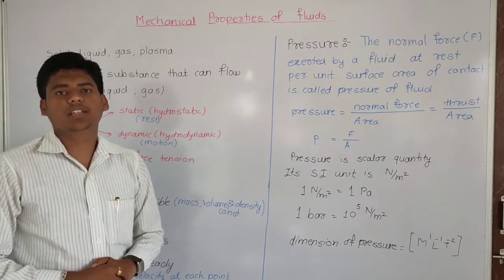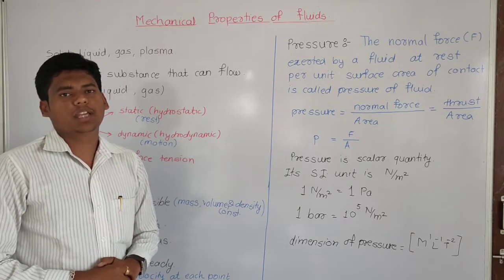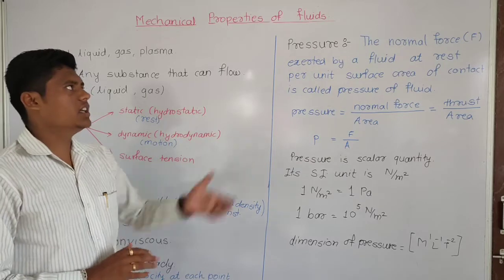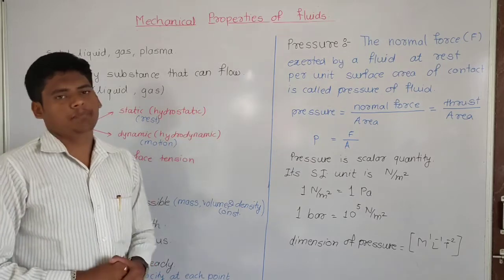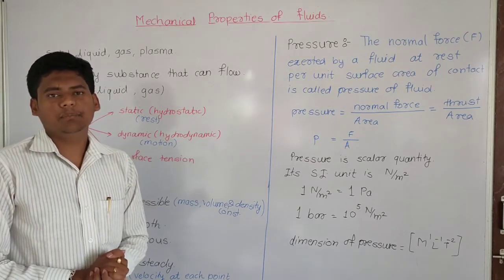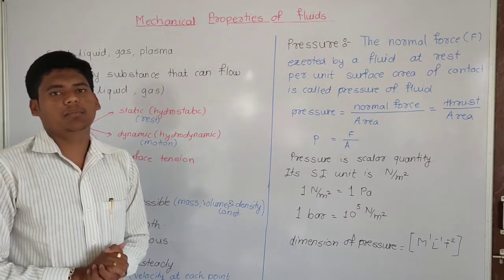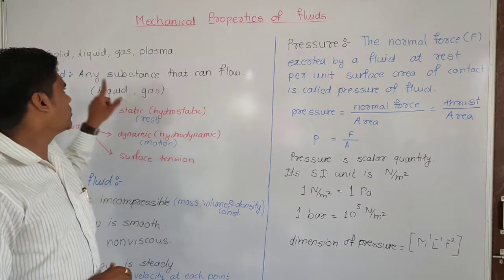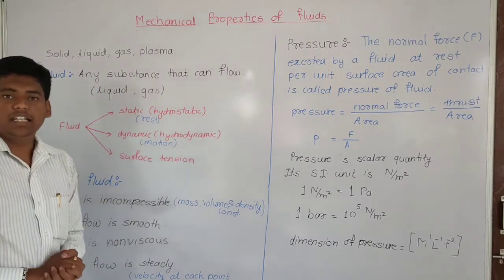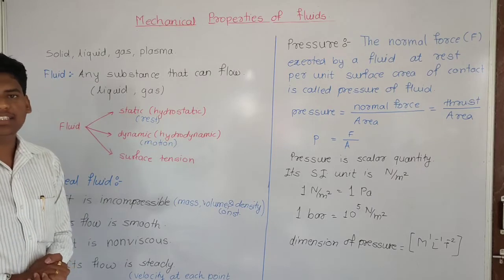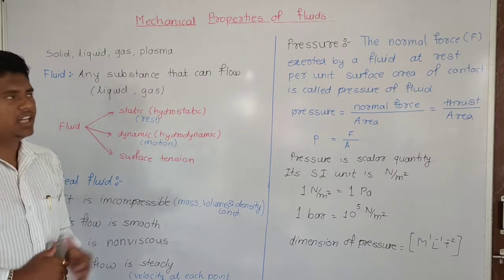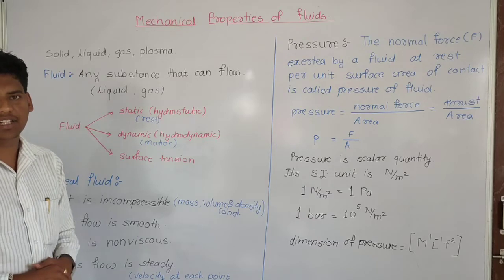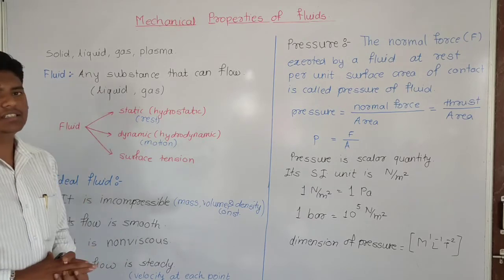In the 11th standard, we have Mechanical Properties of Solids. Next, we have Fluid. If you apply the basic method, there are 4 types of matter: Solid, Liquid, Gas, and Plasma. Plasma is not the same as the others; Solid is also not the same.